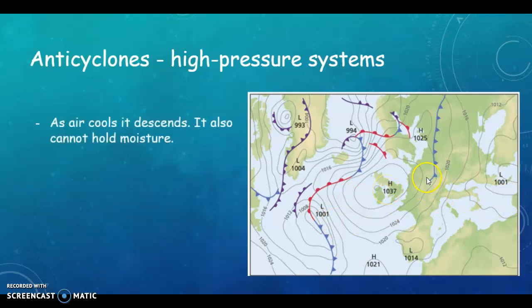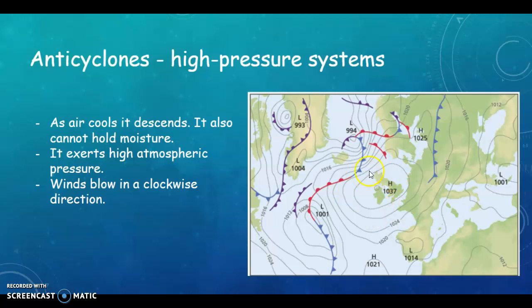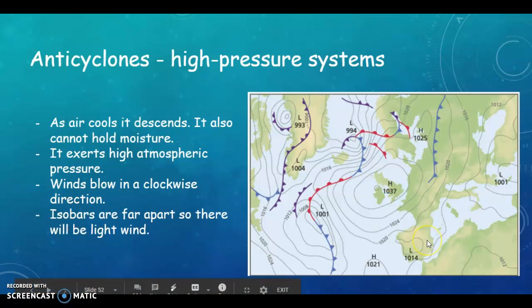So as air cools, it descends and it cannot hold moisture. So think of it cooling and it's coming down and it's pressing down, which gives you the higher pressure. It exerts high atmospheric pressure and winds blow in a clockwise direction. So clockwise being the direction that the hand moves on the clock. So winds will blow in this direction. And isobars are far apart. So there will be light wind.